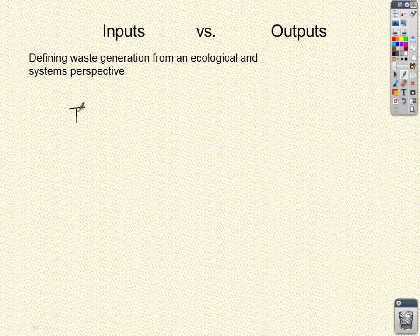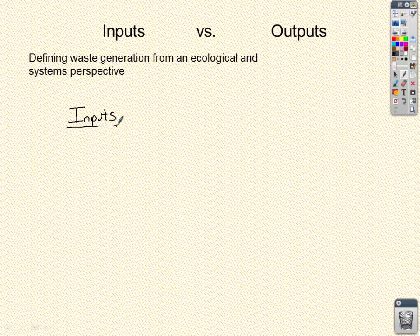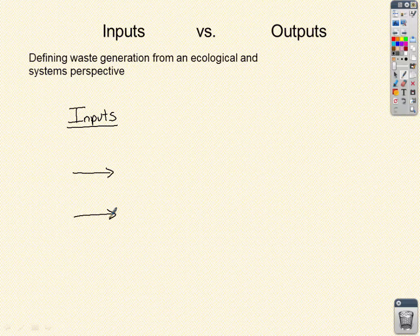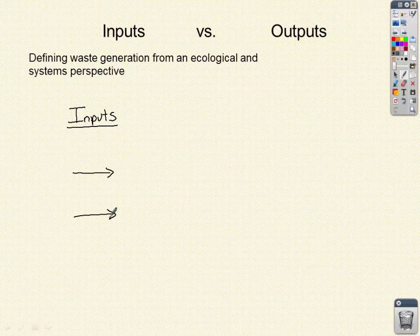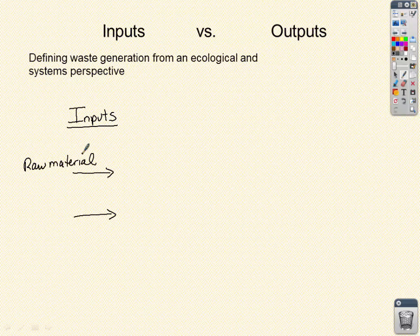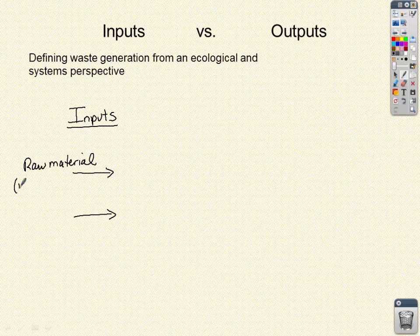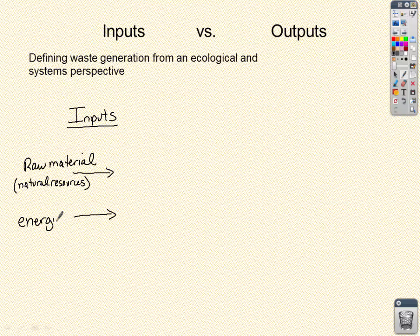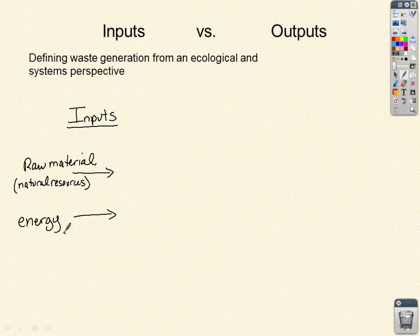Let's start with some inputs. When you're making any material product, there are two inputs that go into the process. Let's think about a plastic water bottle — to make one, you need two things: raw material (in the case of a plastic water bottle, that would be oil) and energy. Those are our inputs: the raw material, or natural resources, used to make the product, and the energy.